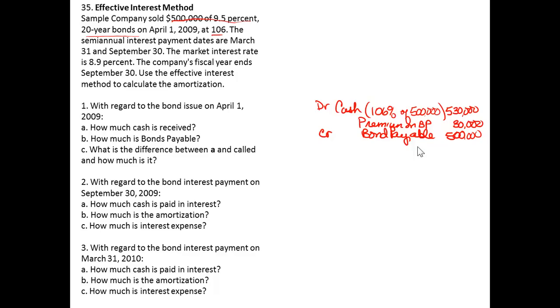So in part A, how much cash is received? $530,000. How much is bonds payable? It's $500,000. And the difference between A and B, which should be in there, is called premium on bonds payable and it's for $30,000. And over the term of this bond, that premium will melt away.